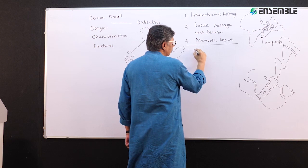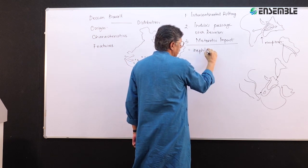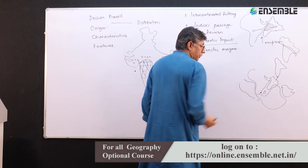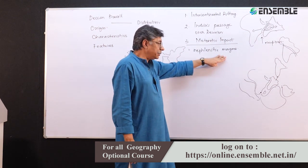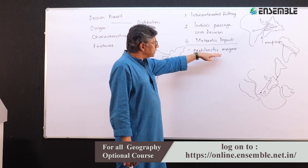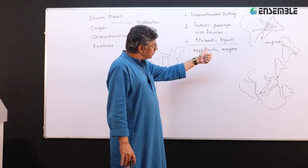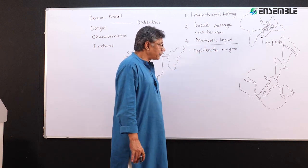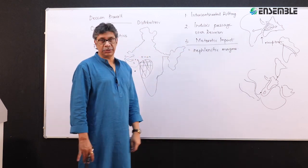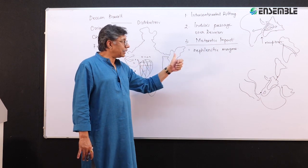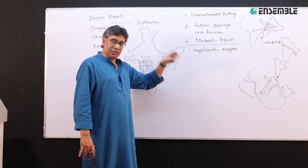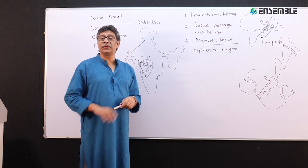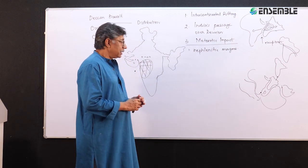One type of lava deposit is nephelinitic magma. The nephelinitic magma may have derived from partial melting in the presence of a small amount of water at a depth of 80 to 100 kilometers. Since it is associated with such depth, this may have been due to intracontinental rifting.